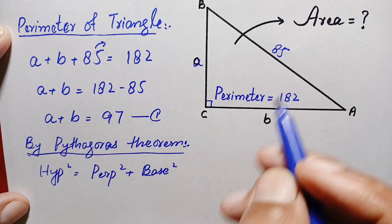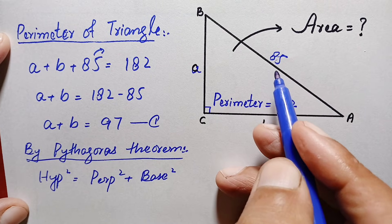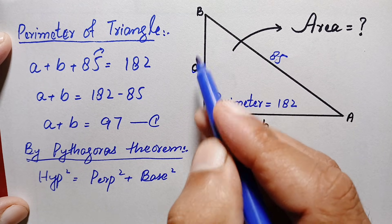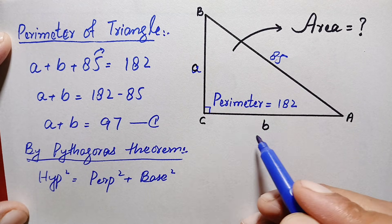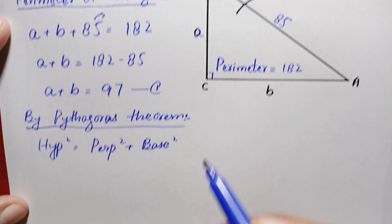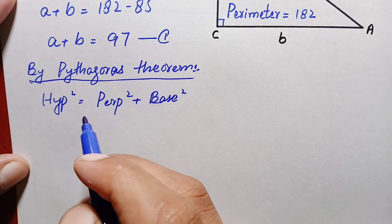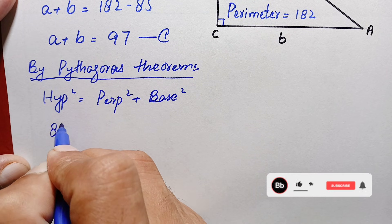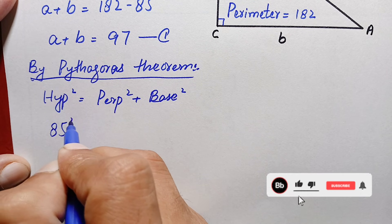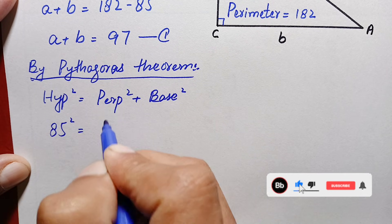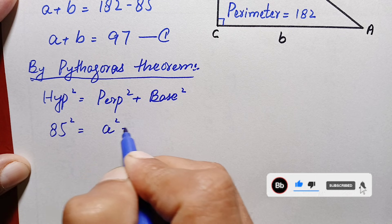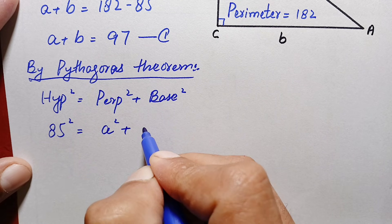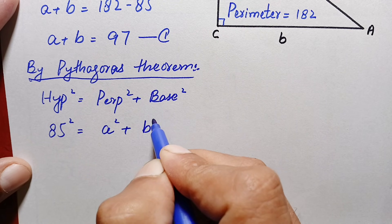In this case our hypotenuse is 85, our perpendicular is 'a', and our base is 'b'. Substituting these values: 85² = a² + b². Let's call this equation number two.